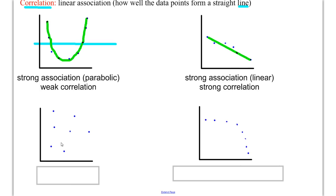This graph down here, the data points don't really have much of a pattern at all, so it would be weak association. And if there's no pattern, there's definitely no linear pattern, so it would be weak correlation.